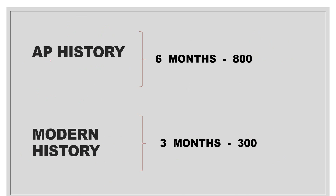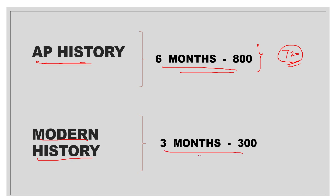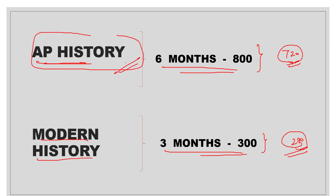Next, we will check AP History. The course starts in recent months. For 6 months, it is ₹800, but for these 4 days with the 10% discount, it is ₹720. For Modern History courses, the 3 months plan is ₹300. If you enroll in this course, it will help you with AP History for Group 1 level exams.